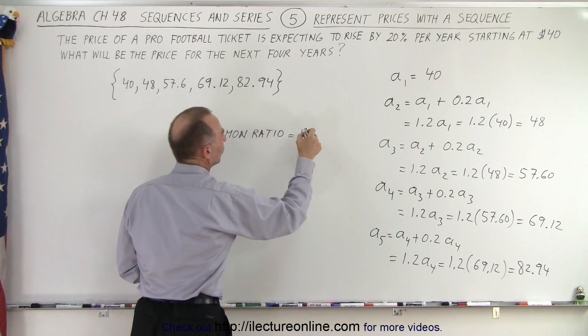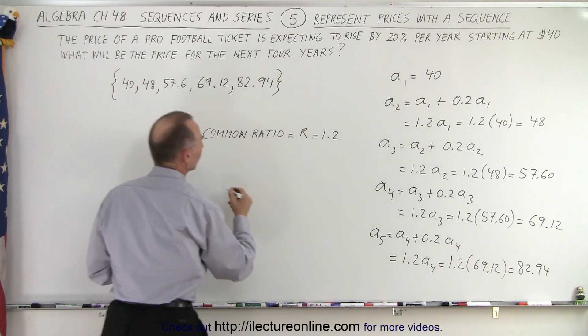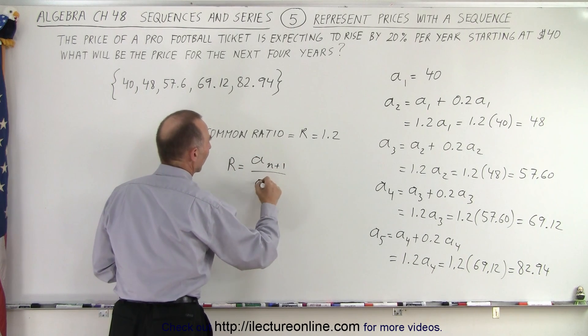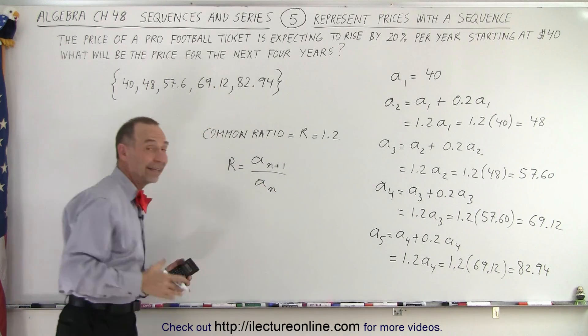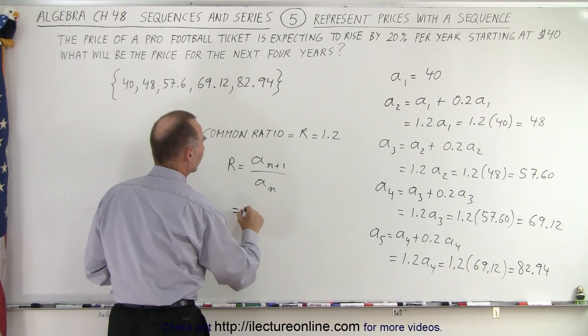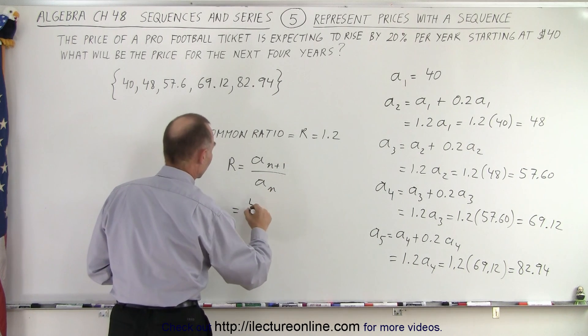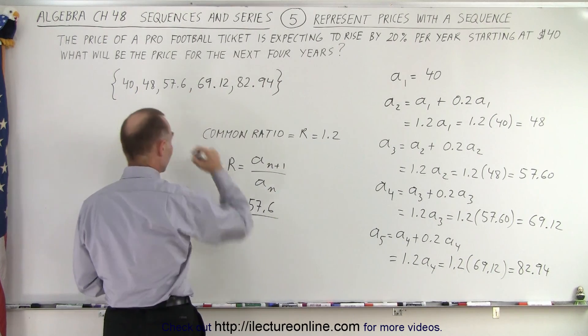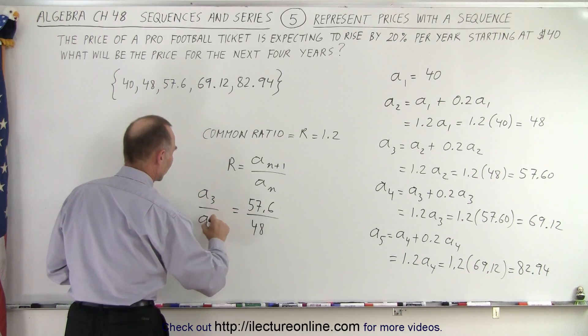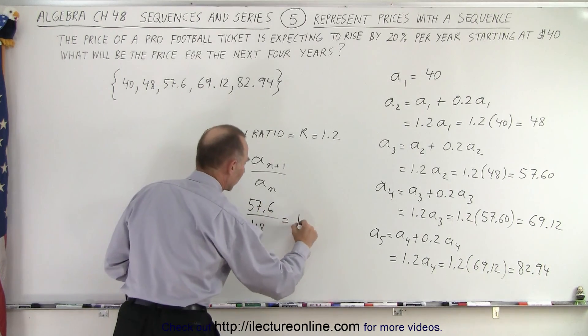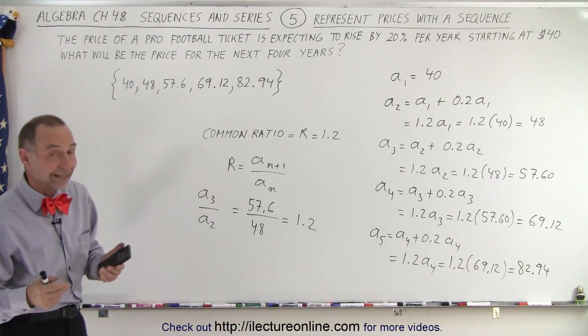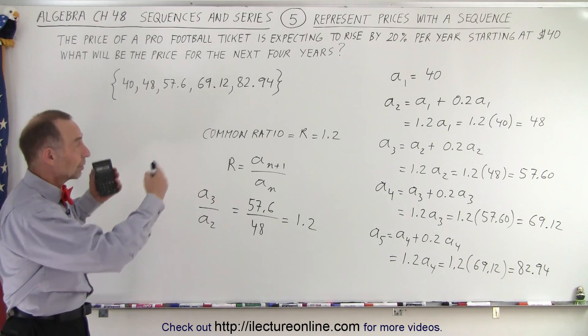So we have the common ratio, which is equal to r. We use the letter r, which in this case is 1.2. So we can say that r is equal to aₙ₊₁ divided by aₙ. The ratio is the next term divided by the previous term. And so in this case, we'll pick, let's say, 57.6 and divide it by the previous, which is 48. Because that is equal to a₃ divided by a₂, we take that ratio and that will come out to be 1.2, the common ratio. And so here we are, we can see that a sequence is definitely very useful in all kinds of situations.